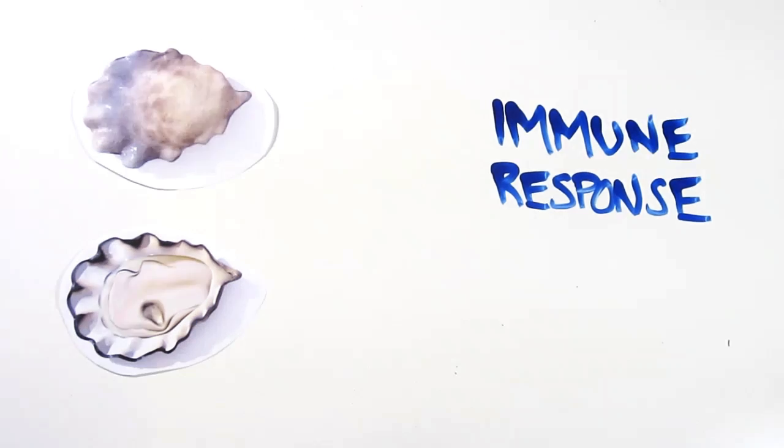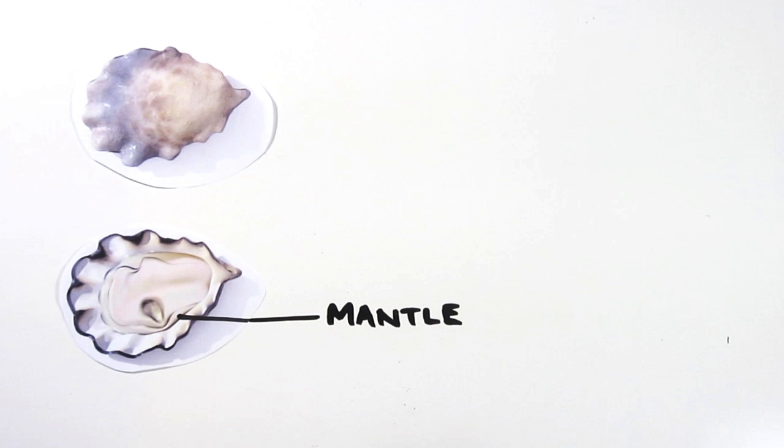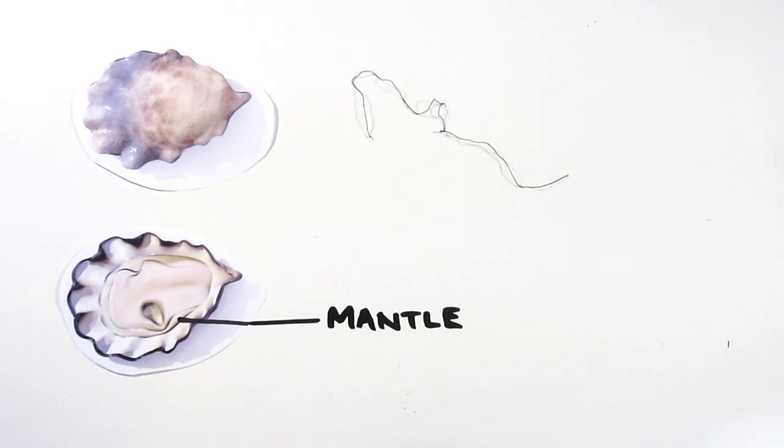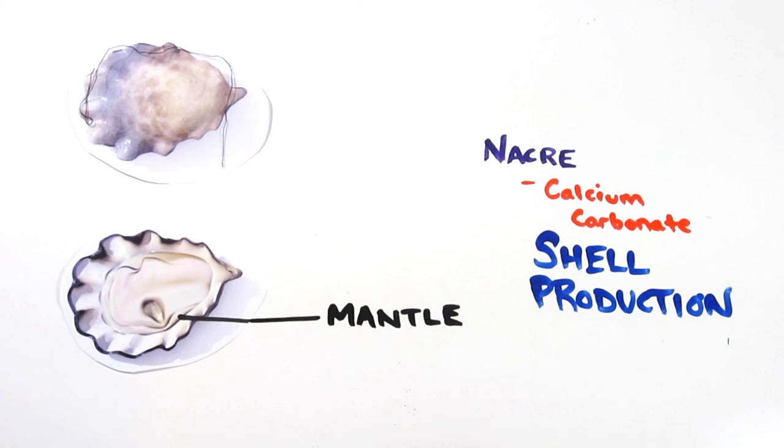Oysters are bivalves, which means their shell has two parts. Inside these shells is an organ called the mantle, which releases a substance called nacre, made primarily of calcium carbonate. This nacre is responsible for the production of the shell.